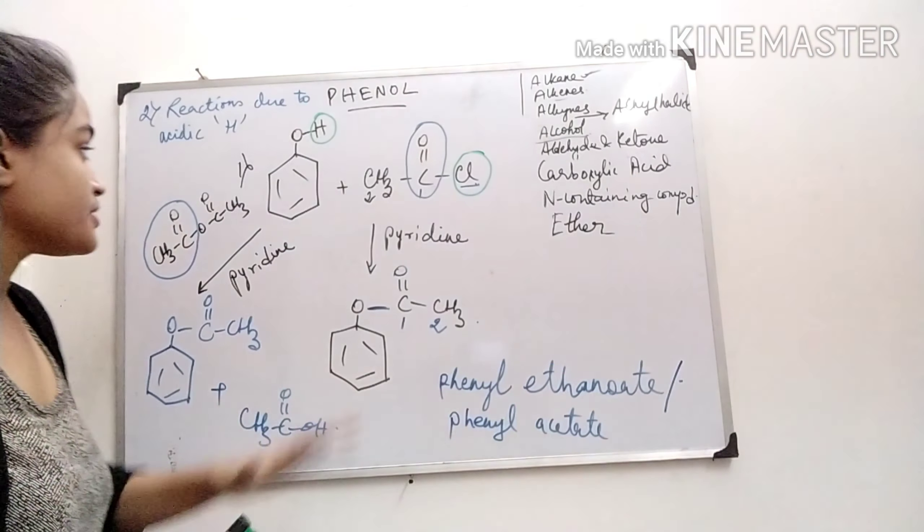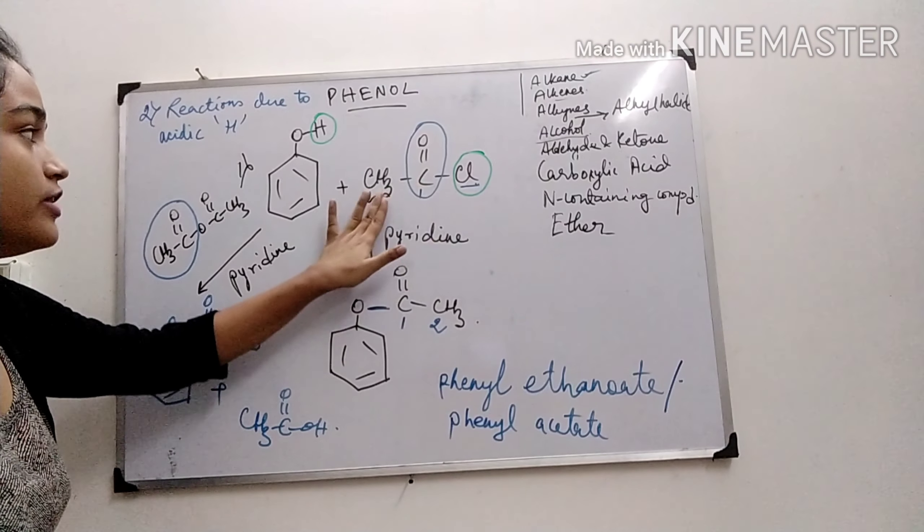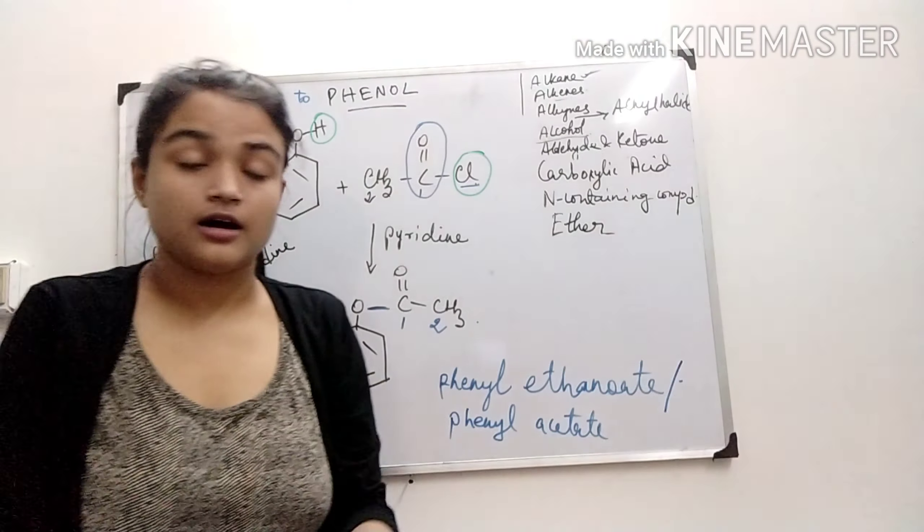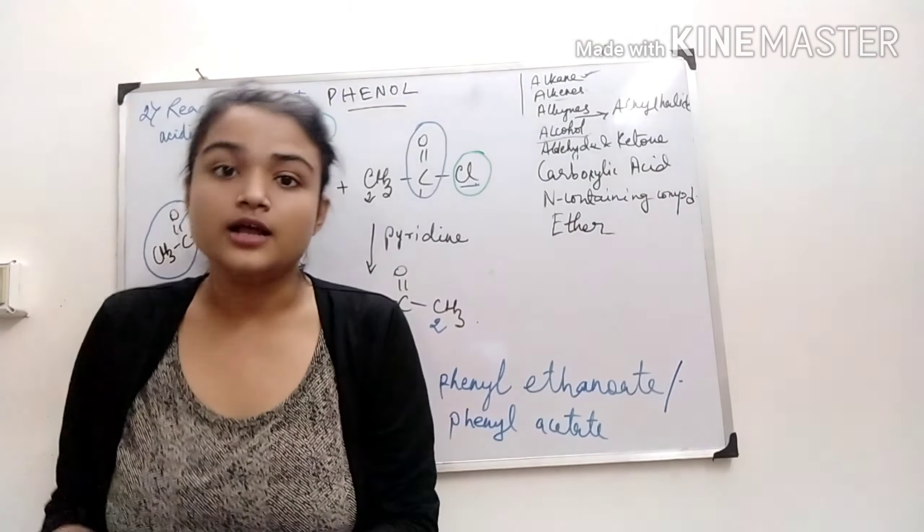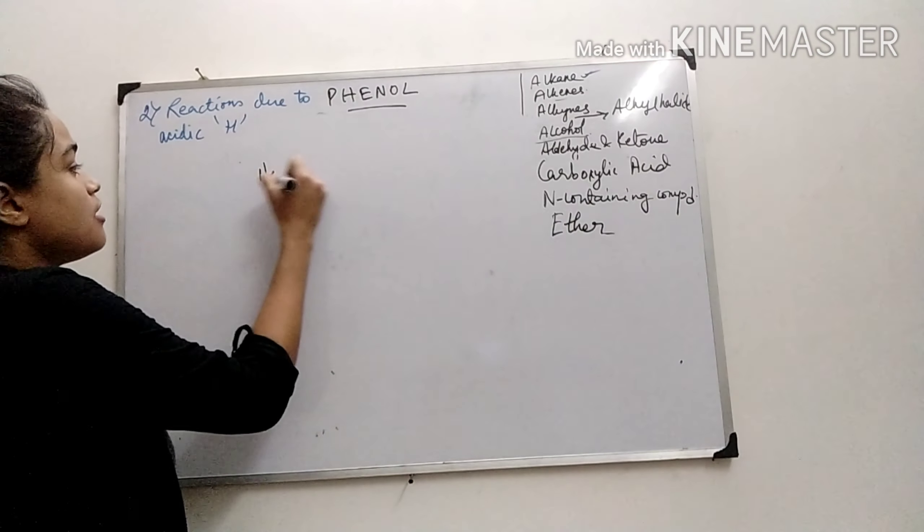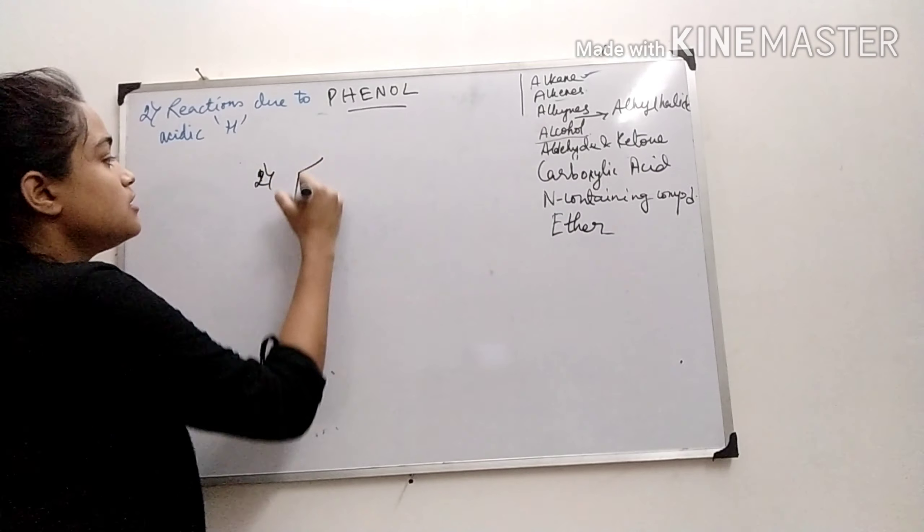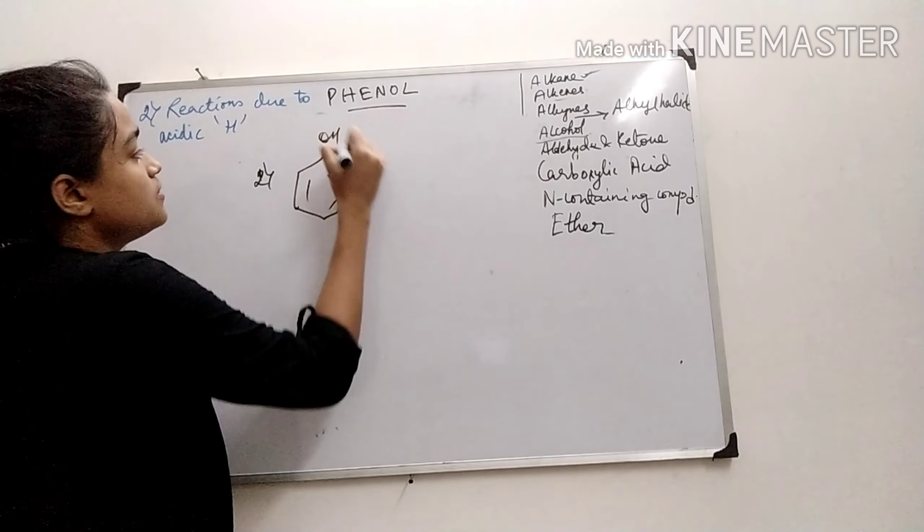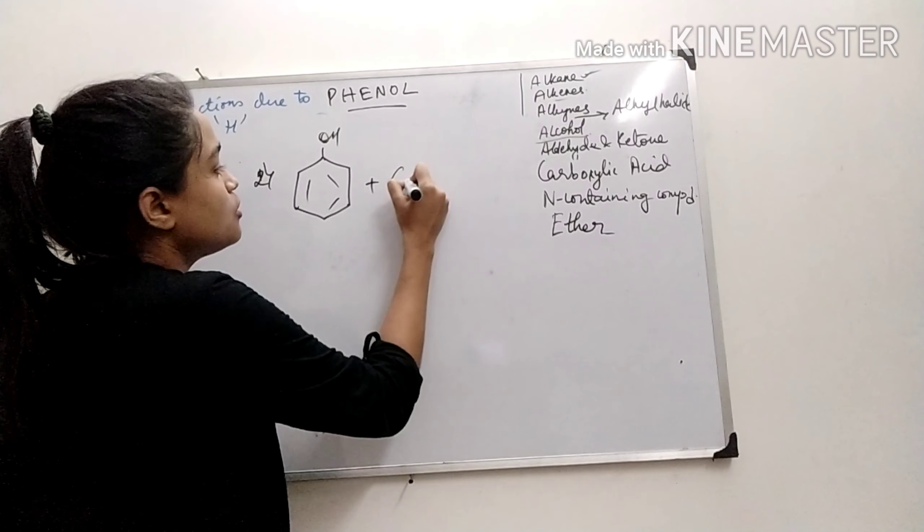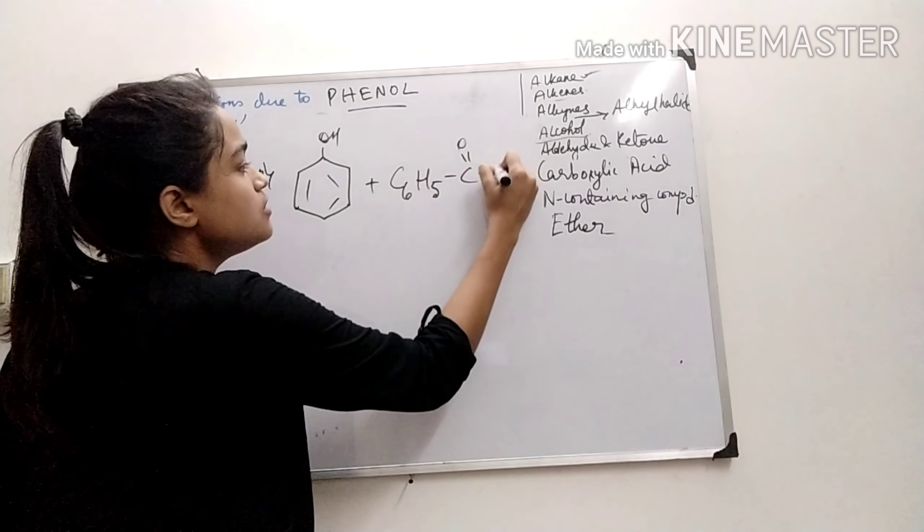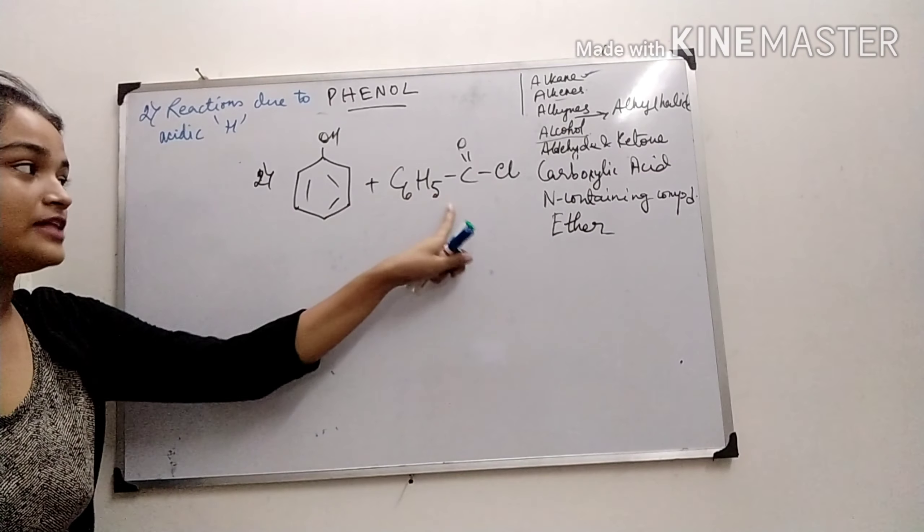Now we will see the same reaction with a benzene group. So treating phenol with benzoyl chloride. C6H5CO-Cl. This is benzoyl chloride.